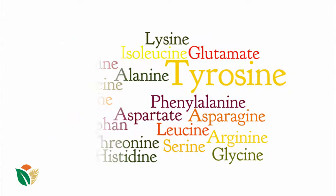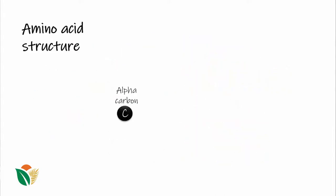So every amino acid has a similar core structure. It all starts with an alpha carbon which has a hydrogen bound. On one side it has an amino group and on the other it has a carboxyl group.